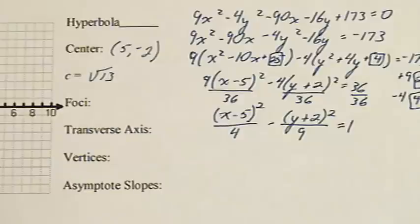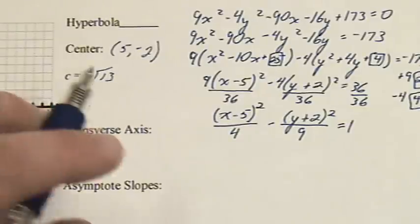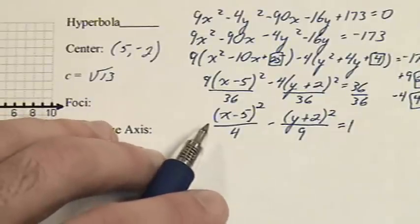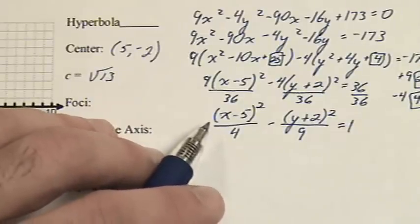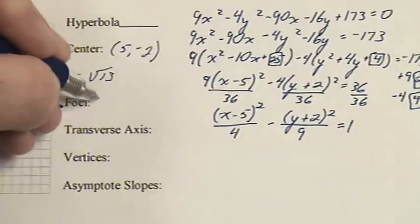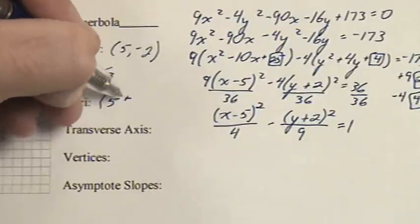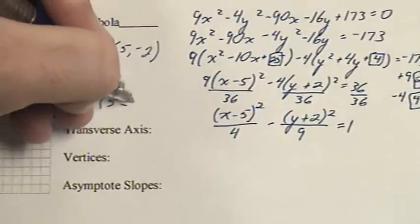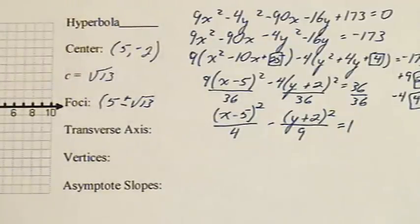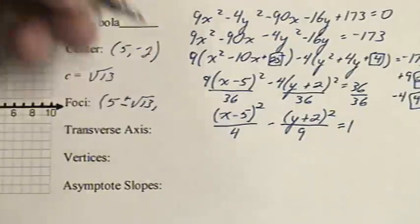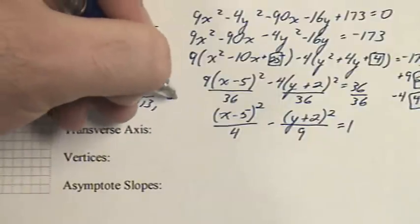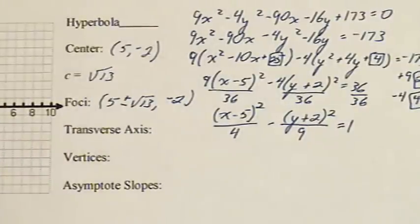To find the foci, we need to change one of the variables from the center. x is the first variable that you see in the equation. That's what we'll be changing. We'll have 5 plus and minus the square root of 13 for our new x, comma negative 2.